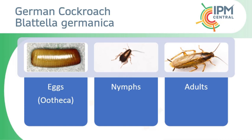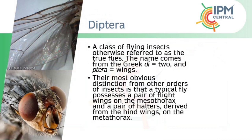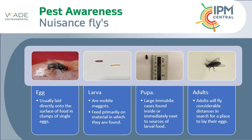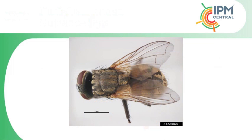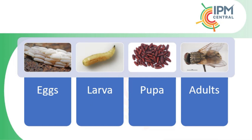Cockroaches undergo incomplete metamorphosis — adults and nymphs look very similar. Cockroaches produce eggs in the form of oothecae, a purse of eggs containing anywhere between 8 and almost 30 depending on species. In the UK we deal with three species most often: Americans, which are relatively large; Orientals, slightly smaller and preferring it cooler; and German cockroaches, which are relatively small but have a very fast turnover — they can get from egg to adult in as little as 30 days under ideal conditions.